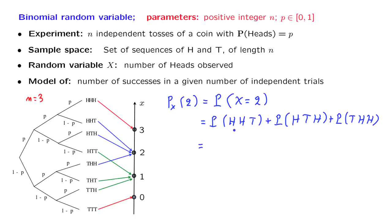The probability of this outcome is p times p times 1 minus p. So it's p squared times 1 minus p. And the other two outcomes also have the same probability. So the overall probability is 3 times this, which can also be written this way.